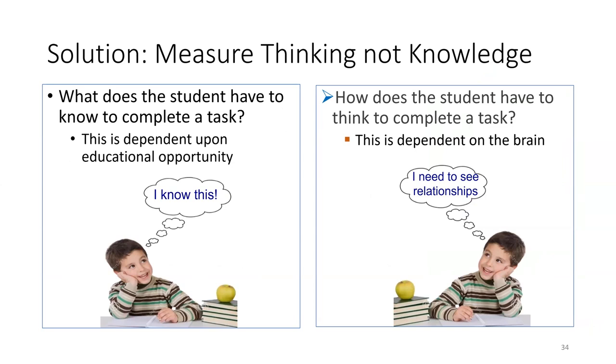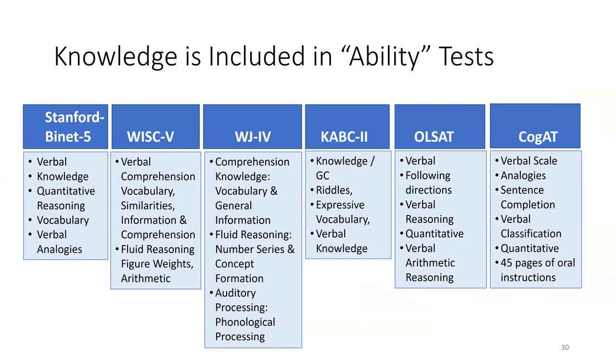So often we confuse knowledge with intelligence. And in the tests that have been used for the last 100 years, it is very typical to find test questions that demand knowledge, which are used to decide how smart a person is. I think that is the major flaw of all the tests we've used for 100 years that have verbal and quantitative content. For example, a typical verbal test on an intelligence test is a vocabulary test, and that kind of test measures knowing.